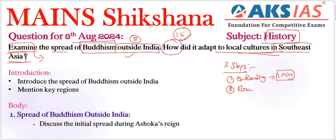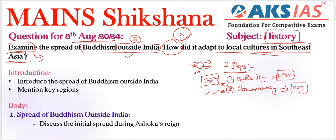Next is brainstorming — we need to brainstorm and recall important aspects regarding our topic within one minute. What are the important points related to Buddhism? We need to write the origin or background, important principles including flowcharts, and different examples or names. We need to focus especially outside India: Sri Lanka, Central Asia, China, Korea, Japan, etc. We also need to provide a timeline — 5th century, 3rd century, etc.